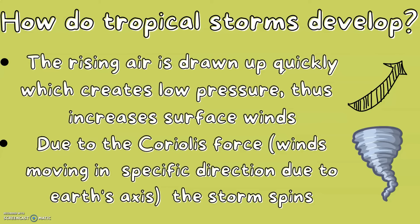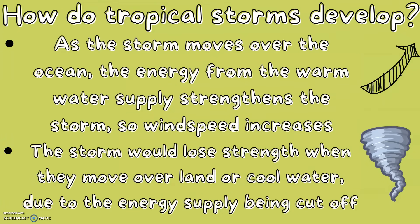Due to the Coriolis force, which is when winds move in a specific direction due to the Earth's tilt and axis, the storm spins. As the storm moves over the ocean, the energy from the warm water supply strengthens the storm, so wind speed only increases. The storm would only lose strength when it moves over land or cool water, due to the energy supply being cut off.